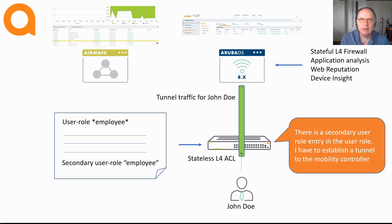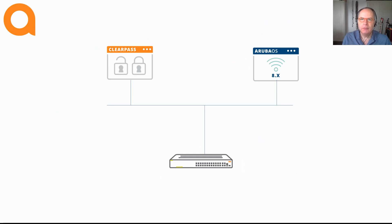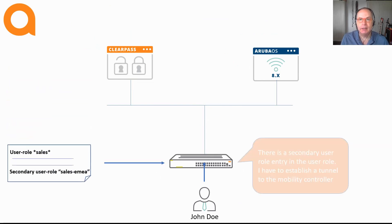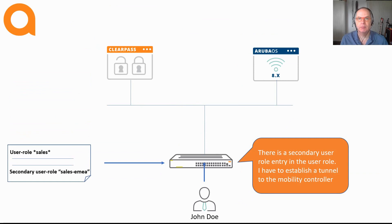Now let me show you how this all works in an animated slide. In the first step, the user authenticates to the network and a user role is applied to that user, either through a local user role or a downloadable user role. In that user role, a secondary user role name is specified. This secondary user role name is a user role that has to exist on the Aruba Mobility Controller, because that is the user role that is applied at the Aruba Mobility Controller end.